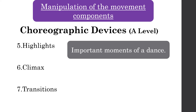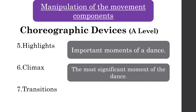Number five: highlights — important moments of a dance. Notice the plural 'moments', meaning there's more than one highlight throughout your choreography. Think about when you really want to highlight important moments — figuring out the light and shade of your choreography. Climax, which links to highlights, is the most significant moment of the dance — there's only one climax, the most important moment. There can be more than one highlight, but only one climax. In relation to the dance idea, how are these going to portray your dance idea and draw the audience's attention? Make sure the climax relates strongly to your dance idea.